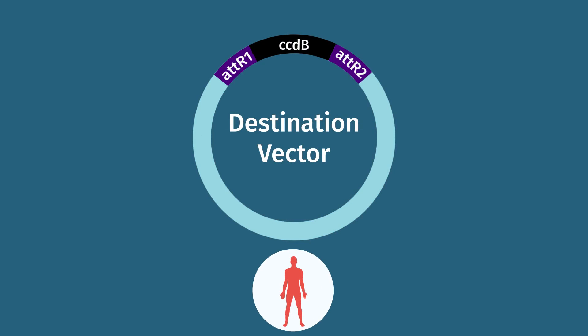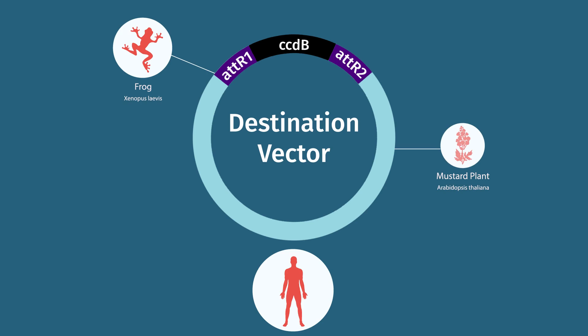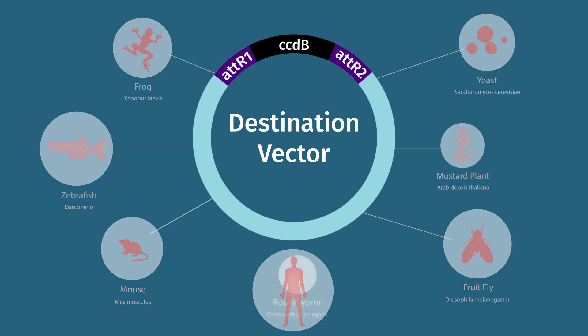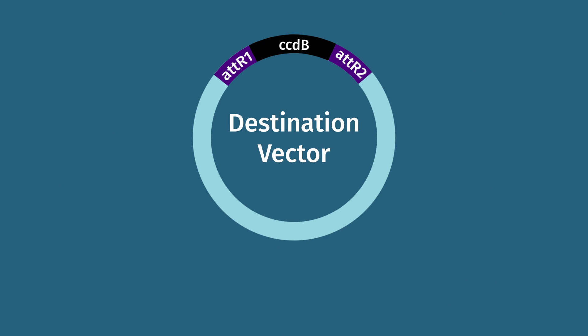There are multiple families of destination vectors for common experimental goals, including protein expression and purification, fluorescent fusion proteins, and two-hybrid screens. These vectors are adapted for all standard experimental systems. Destination vectors carry a different antibiotic resistance gene to entry vectors, allowing you to select for the expression clone easily.